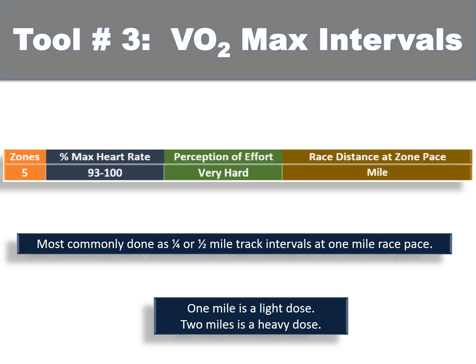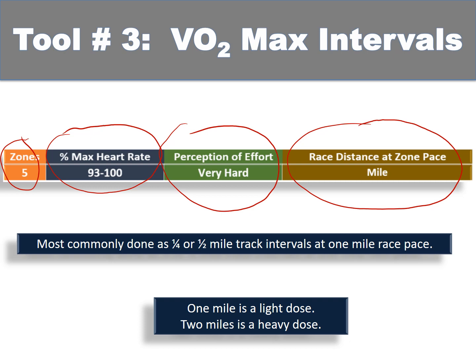Tool number three is VO2 max intervals — sometimes called track intervals. This is zone five: 93 to 100 percent max heart rate, perception of effort is very hard, approximately mile best race pace. The simplest and most common way to do this is using a measured distance like a track. We run these as quarter mile or half mile track intervals — half mile is the more commonly used and more effective distance. The reason we use distance rather than time will become clear shortly.